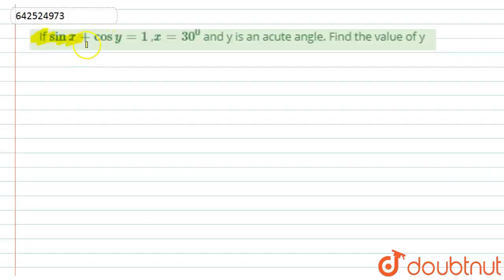Here we have given: if sin x plus cos y is equal to 1 and x is equal to 30 degrees, then y is an acute angle. Find the value of y. So let's start with this solution.